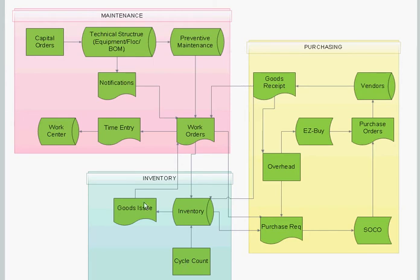Cycle count falls under the inventory category. Another term used for it is physical inventory count. As an example, you have a store and every week you check inventory to make sure that the number of chocolate bars or products that you have match what's on your books. And if you have less or more, you wish to have an explanation for that. For a company like Maple Leaf Foods, it's good to do it maybe once every month or every three to six months.